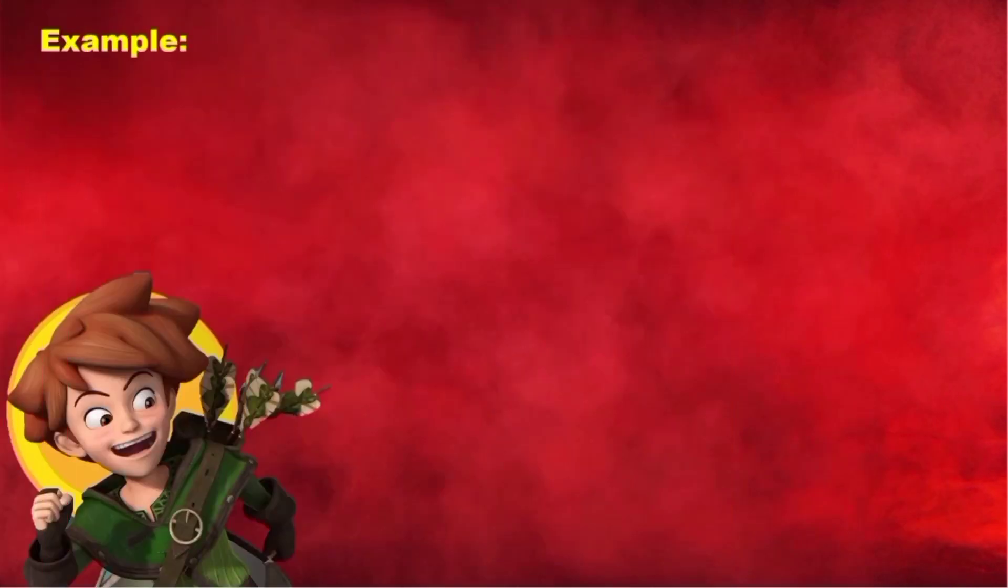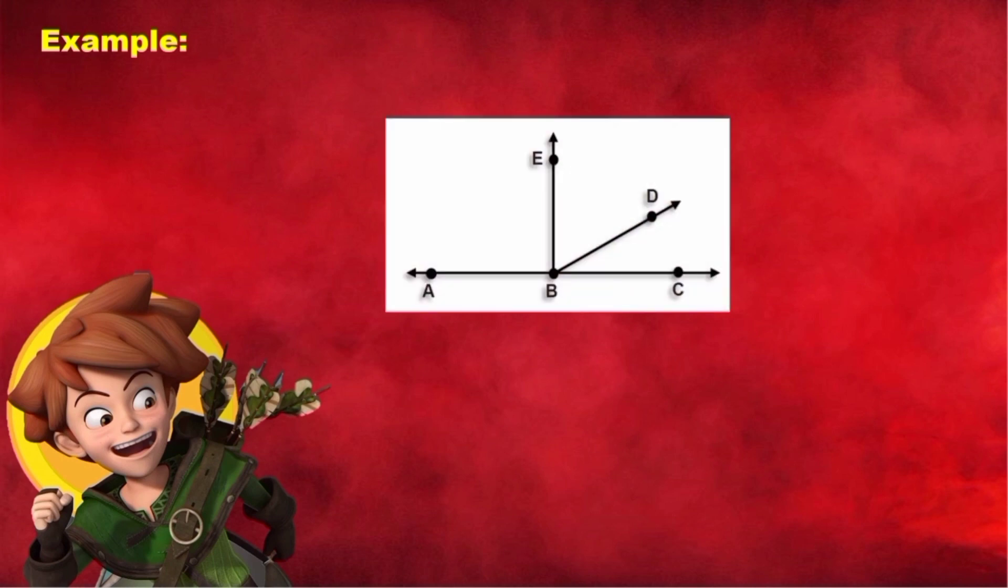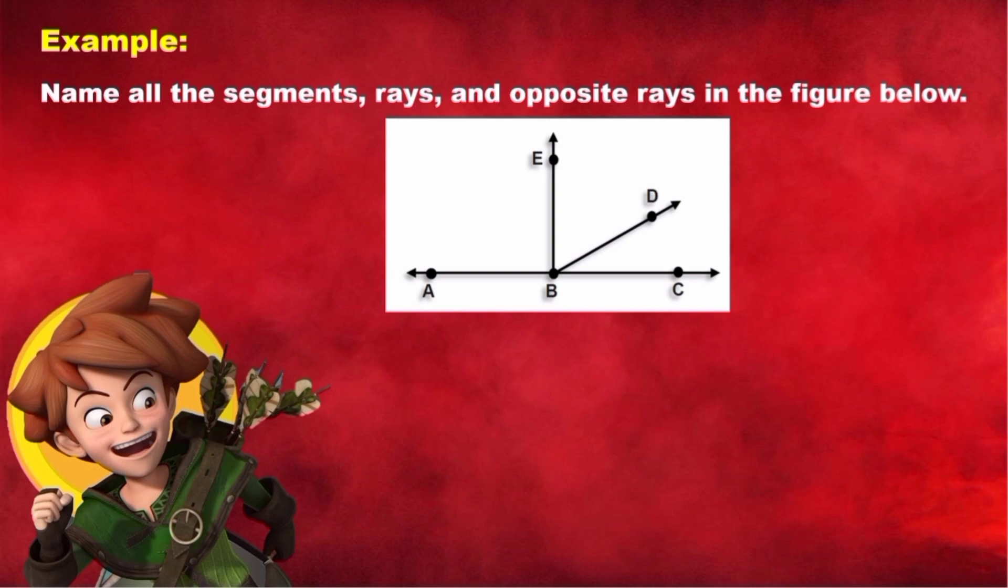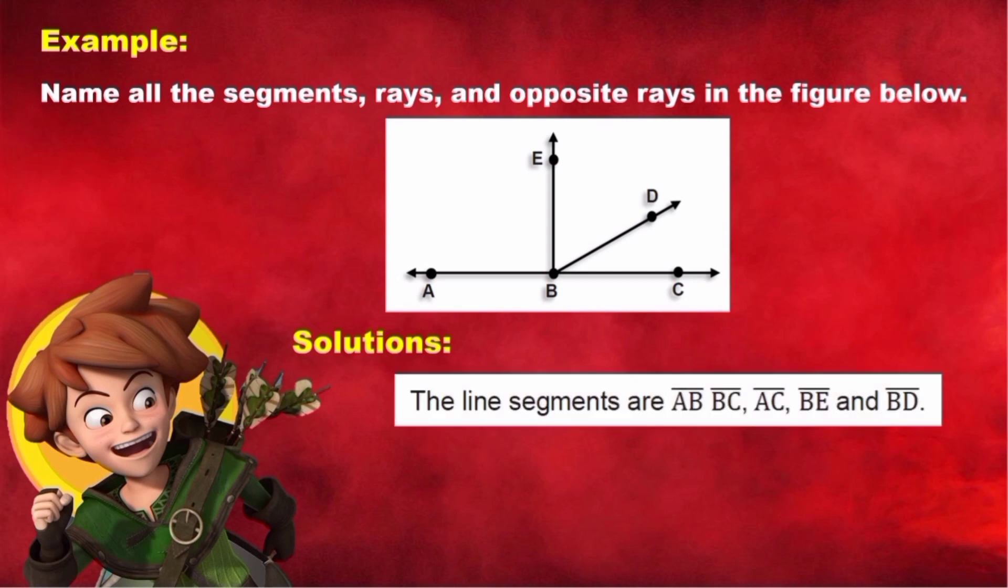Let's have an example. Now, look at this figure. Name all the segments, rays, and opposite rays in the figure below. Here are our solutions. The line segments are line segment AB, line segment BC, line segment AC, line segment BE, and line segment BD.